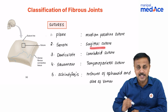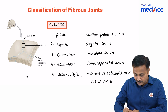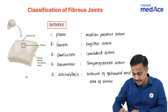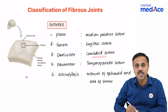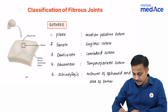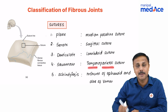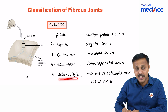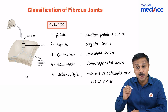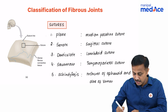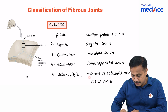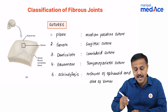For denticulate suture, it is the lambdoid suture. For squamous suture, it is the suture that overlaps between the temporal and the parietal bone. Schindylesis is again a special type of suture which is found between the rostrum of the sphenoid and the ala of the vomer.